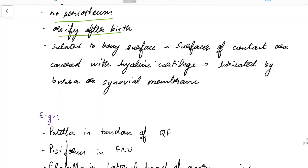Sesamoid bones are related to other bony surfaces. The surfaces of contact are covered with hyaline cartilage and are lubricated by bursa or synovial membrane.